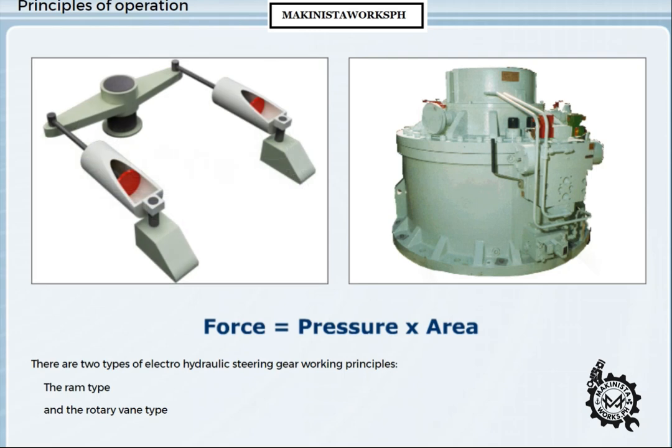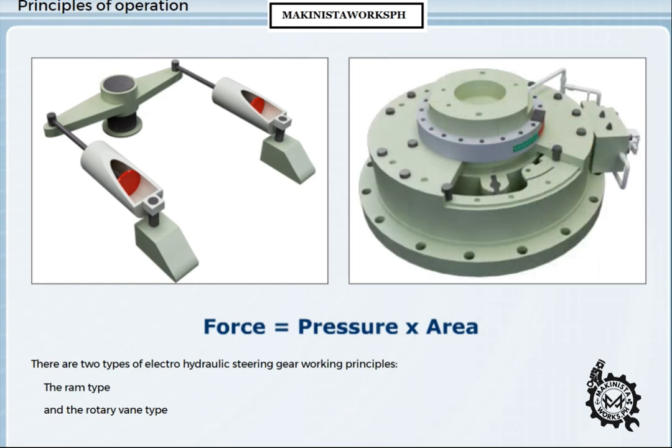In the ram type, the chamber is formed by rams or pistons in a cylinder. In the rotary vane type, each pressure chamber is formed between a fixed and moving vane.